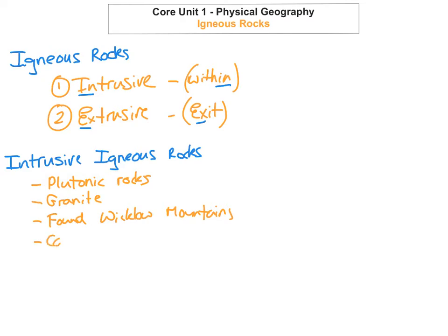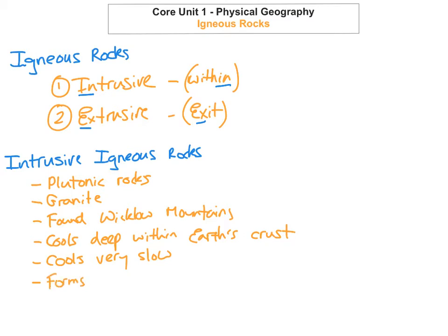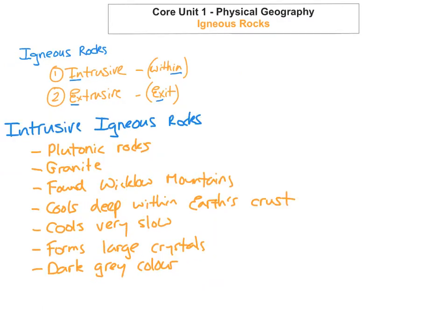Key points for intrusive igneous rocks: cools deep within the Earth's crust; cools very slowly; forms large crystals because it cools very slowly, giving lots of time for crystals to form, as it's not exposed to air or water. Granite is usually a dark grey colour. It is used for buildings.